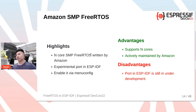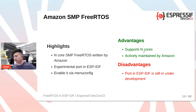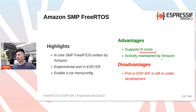Amazon SMP FreeRTOS is a recent addition. Amazon wrote an n-core capable SMP version of FreeRTOS, and there's an experimental port within ESP-IDF that users can enable via menuconfig. Advantages: it supports n-cores, so if there's ever an ESP chip with more than two cores, Amazon SMP FreeRTOS is well-positioned to support it. It is also actively maintained by Amazon. The disadvantage is that the port within ESP-IDF is still under development and not yet in a completely stable state.